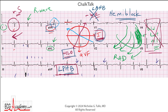Isolated posterior hemiblock is actually unusual — it doesn't happen very often. It's the least likely hemifascicle to be affected because it's actually the largest and tends to be the most robust. Anterior hemiblocks are much more common because the anterior fascicle is a skinny little thing that can be affected by a number of things, slowing it down and causing the anterior hemiblock appearance of a marked left axis deviation.